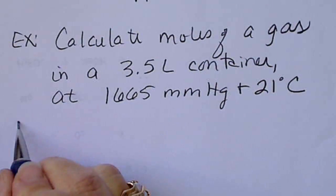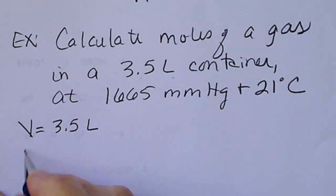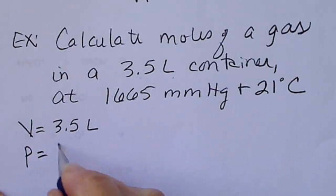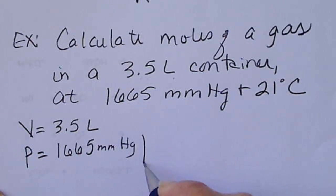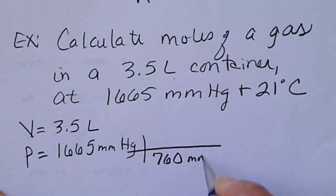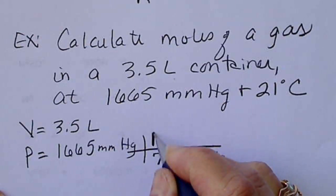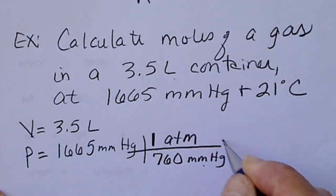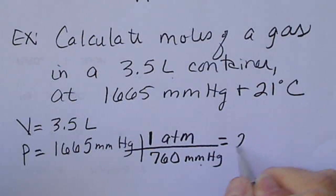So this is our V. V is 3.5 liters, that's already in the correct unit. Our pressure is in millimeters of mercury. So from the previous slide, we saw that to convert millimeters of mercury to atmospheres, we divide by 760. So this is the distance the mercury column rises, and we define that sea level pressure as one atmosphere. So our pressure would be 2.19 atmospheres.